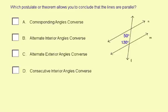And since they add to 180 degrees, we know that lines N and M have to be parallel. So it's the Consecutive Interior Angles Converse that says if two consecutive interior angles are supplementary, then the lines are parallel.